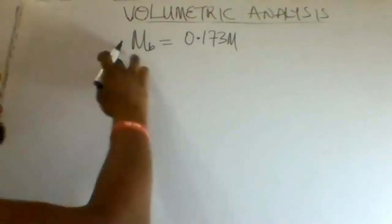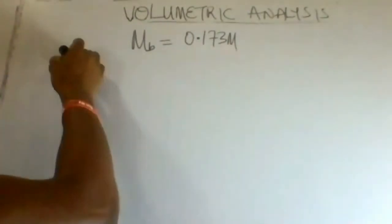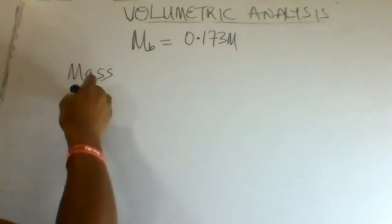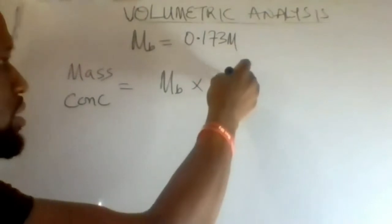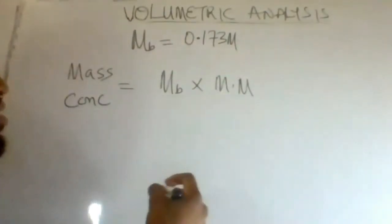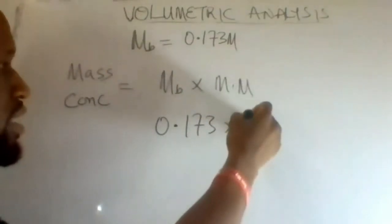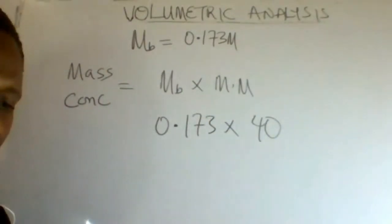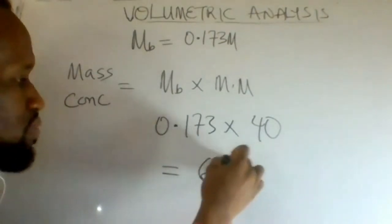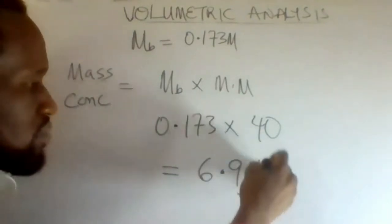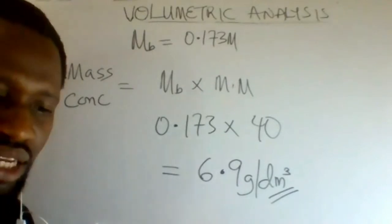Since we now have the molar concentration of sodium hydroxide as 0.173, the mass concentration equals the molar concentration multiplied by the molar mass of sodium hydroxide. This is 0.173 multiplied by 40, which gives a mass concentration of 6.9 grams per dm³.